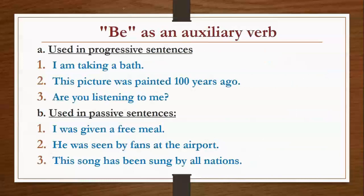First we will talk about 'be' as an auxiliary verb. We use 'be' in two types of sentences: first, progressive (continuous) sentences, and second, passive sentences. For example: 'I am taking a bath.' This is a continuous action. Here you see 'am', which comes under 'be'. When we use 'be' in a statement, we don't write 'be' directly. 'Be' means the use of is, am, are, was, were — all of these come under 'be'.